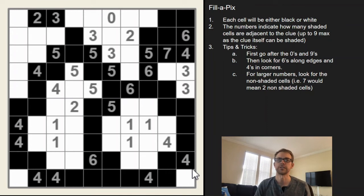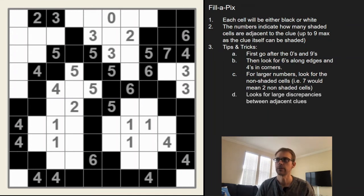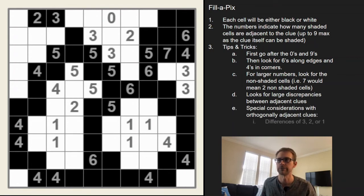So that was a very easy puzzle, again, just as an example. But one last thing to just know is that I typically try to look for large discrepancies between adjacent clues in the harder puzzles. The reason for that is there's some special considerations when you have large differences. So if you have a difference of three, you know you can solve it right away because the three cells above the pair needs to be all shaded.